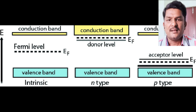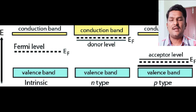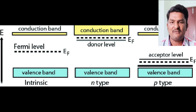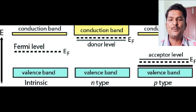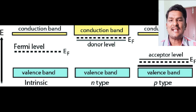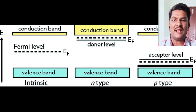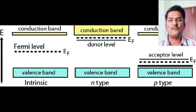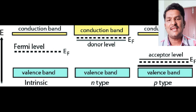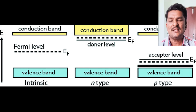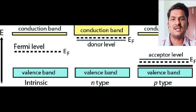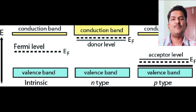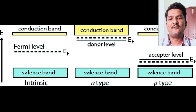The average energy level of conduction electrons and holes is called the Fermi energy level. In the case of a pure semiconductor, the Fermi energy level lies exactly in between the valence band and conduction band. In an N-type semiconductor, the Fermi energy level shifts towards the conduction band, and in a P-type semiconductor, the Fermi energy level shifts towards the valence band.